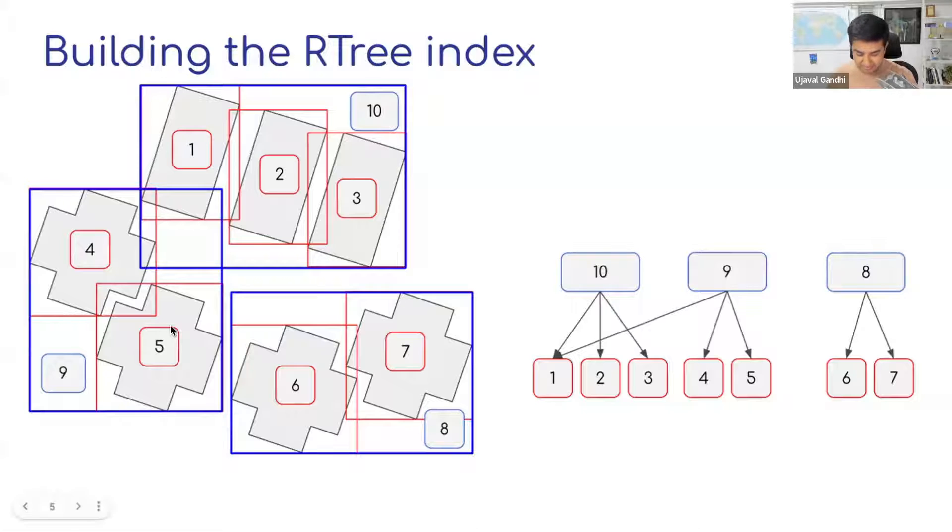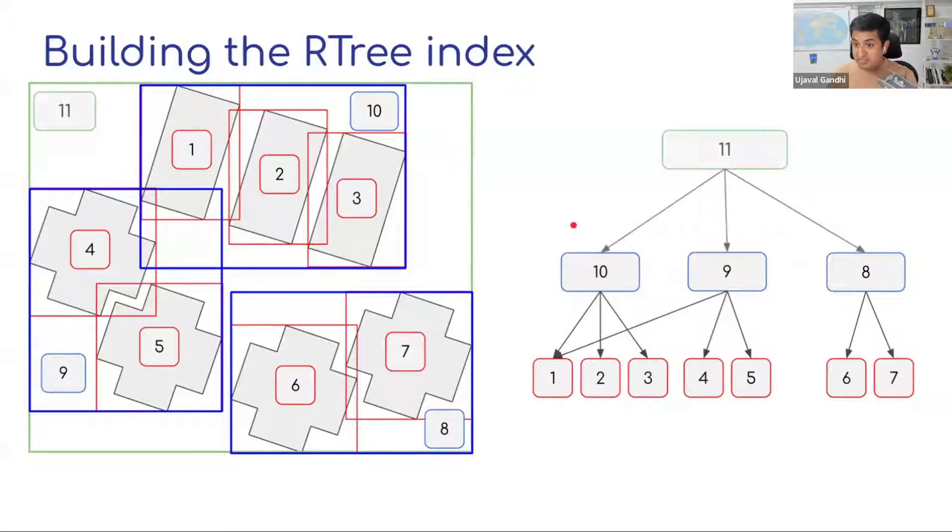And you can say this becomes the bounds eight, nine, and 10. So you had those bounding boxes at the bottom level. You group close bounding boxes together, and then you keep doing this till you have just a single bounding box left which covers the entire layer. This is the process of index creation. So given any point, line, polygon layer, you go through this process and you build this tree.